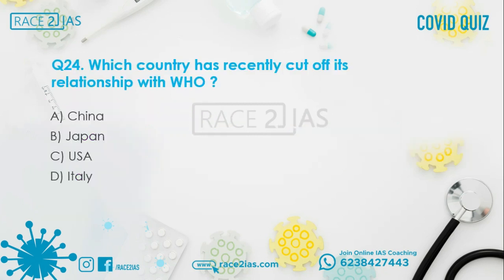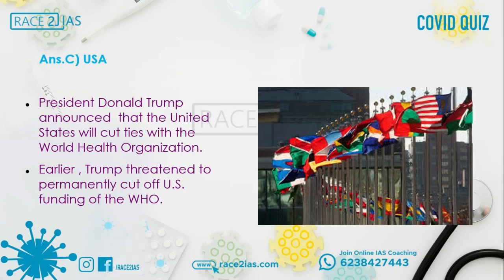Question number 24: Which country has recently cut off its relationship with WHO? Option A: China. Option B: Japan. Option C: USA. Option D: Italy. The right answer is Option C, USA. President Donald Trump announced that the United States will cut ties with the World Health Organization.